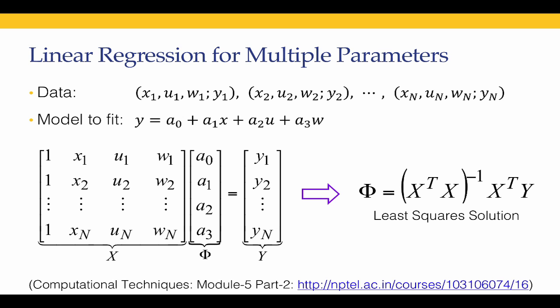For example, we can have 15 data points to which we want to fit 4 parameters. If n equals 15, we will have 15 rows and only 4 columns. This system does not have a unique solution, so we are interested in finding the least squares solution.